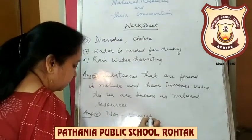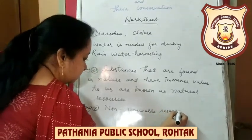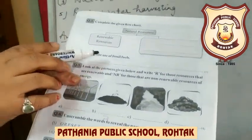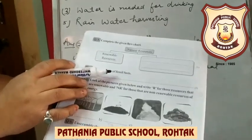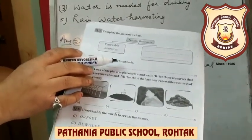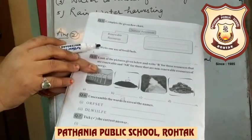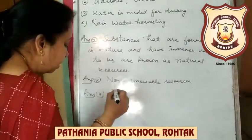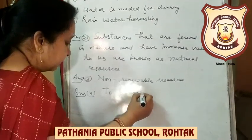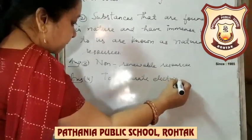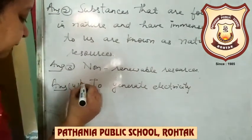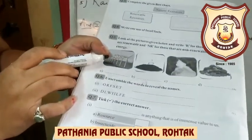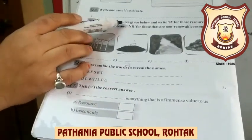Question number four: Write one use of fossil fuels. Fossil fuels like coal and petroleum are used for generating electricity. Write down here: fossil fuels help to generate electricity.